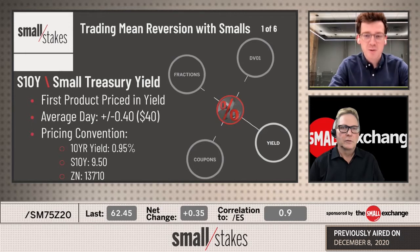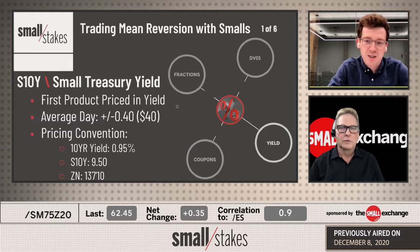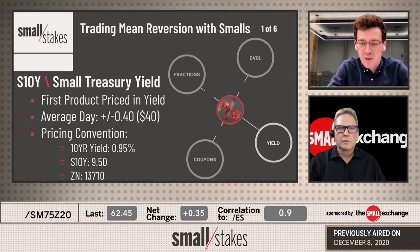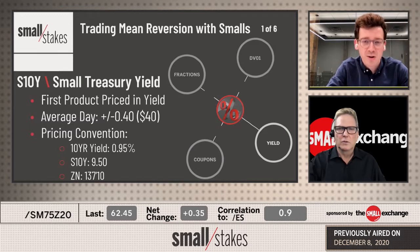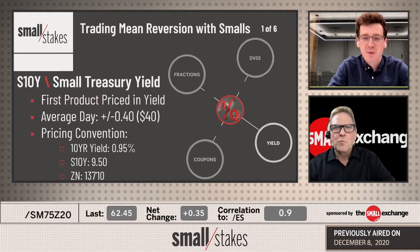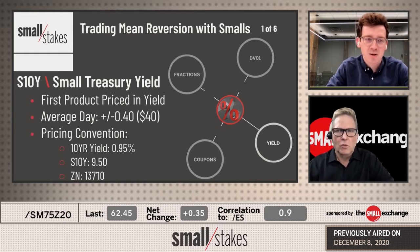S10Y is the first product to be priced in yield, whereby you're getting rid of DV01, fractions, coupons, and other things that have been barriers to entering the interest rate trade for so many people. It's like you have to take a whole class in interest rates and how to price a treasury with par values just to trade. We wanted to create a scenario where you don't have to understand how Apple works to trade its stock.